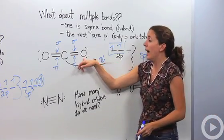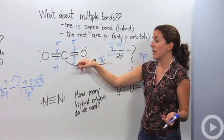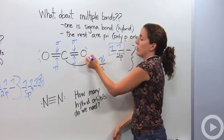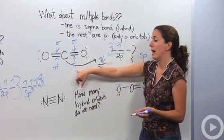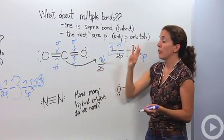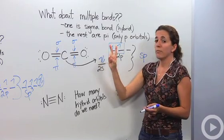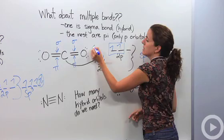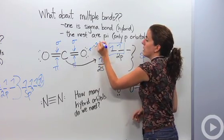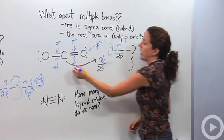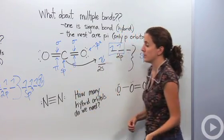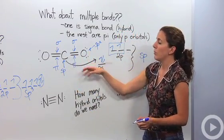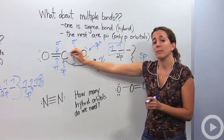Now let's look at oxygen in CO2. Oxygen also has a sigma bond, a pi bond, and lone pairs. The sigma bond and the lone pairs are going to be hybridized, but not the pi bond — we leave that alone. We need three hybrid orbitals: one from s and two from p, so it's going to be sp2. Carbon was sp; oxygen is sp2. It doesn't matter that they have different orbital types — we just want the orbitals within each atom itself to be the same.